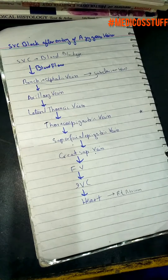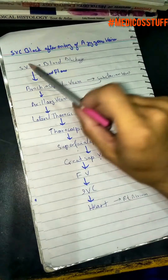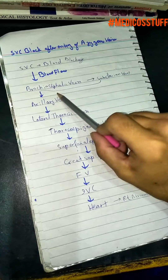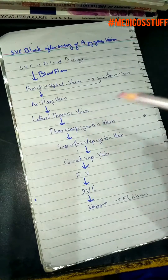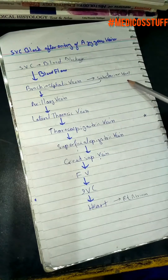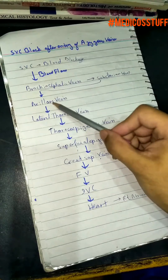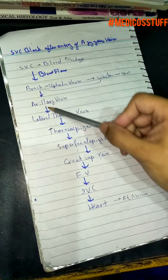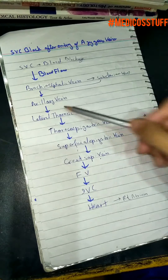If the SVC is blocked, the blood flow will go into the brachiocephalic vein, then from the brachiocephalic vein it goes into the subclavian vein, then after the subclavian vein it goes into the axillary vein, and after that it goes into the lateral thoracic vein.